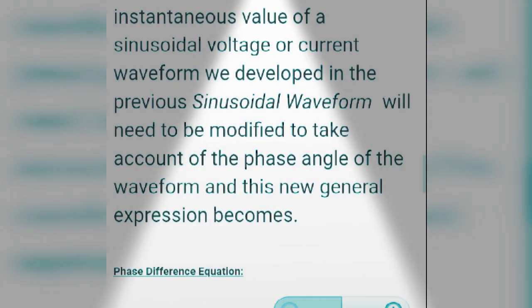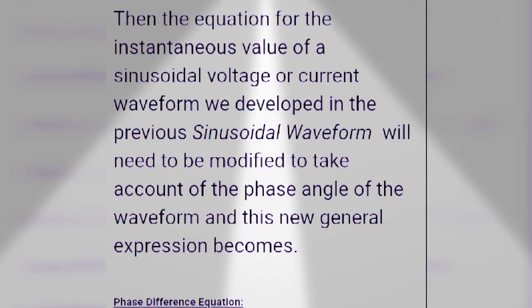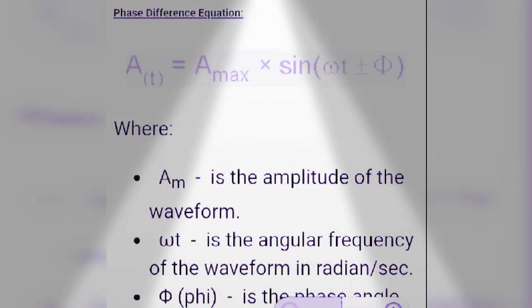Then the equation for the instantaneous value of a sinusoidal voltage or current waveform we developed in the previous sinusoidal waveform tutorial will need to be modified to take into account the phase angle of the waveform. This new general expression becomes: